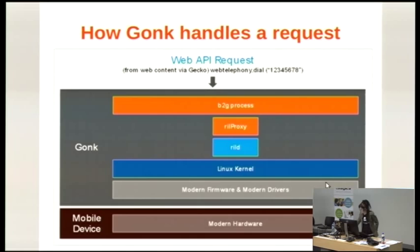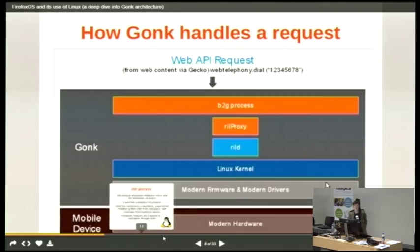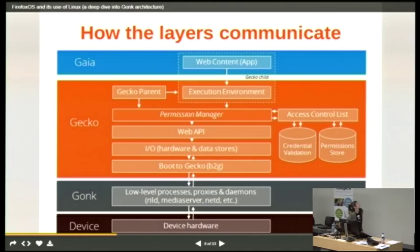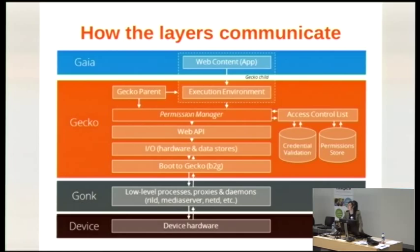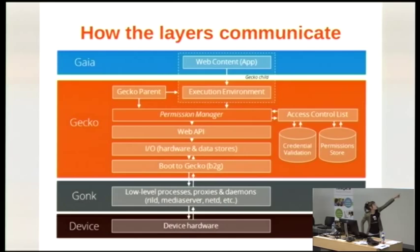Looking at how they actually communicate across the full stack of layers: Gaia is where the application lives. The app communicates to Gecko through the execution environment, which in turn talks to the permissions manager, who is only able to access the web APIs to the underlying hardware. This goes through, checks the ACL (access control list), checks that you have the permissions and credentials, passes it through the web API to the hardware, through Boot to Gecko, and then down into Gonk. Gonk communicates to the device.